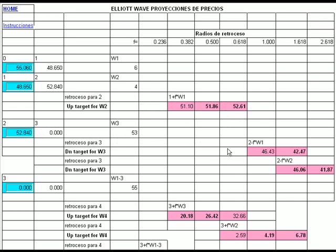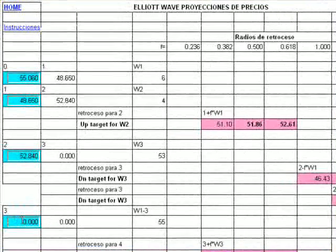We can see now we have 4 targets: the ones generated taking into account wave 1, and the ones generated taking into account wave 2. These are our down targets for wave 3. As before, the bold ones are the most likely to occur — 42.47 and 46.06 are the most likely. As the movement took place, our next pivot is 41.61, and with this we have our third wave complete.